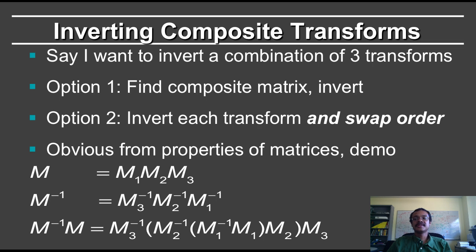So there are 2 ways in which you can do this. First, you can find the composite matrix given by multiplying together each of the individual transformation matrices. And then you can use a general matrix inversion procedure to invert that matrix.